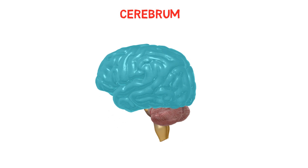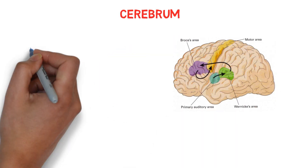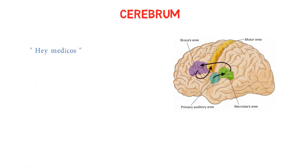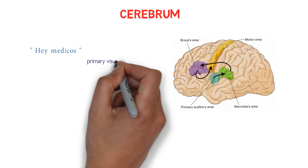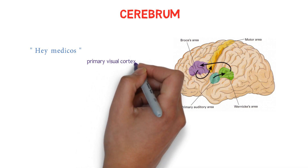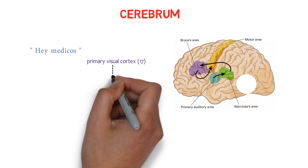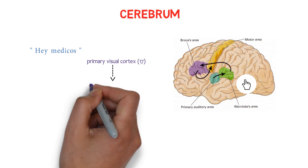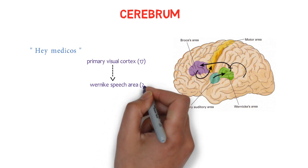We are learning about the cerebrum because it regulates many functions. For example, when you see the words 'hey medicos,' those signals are interpreted in your primary visual cortex — area number 17 — located in the most posterior portion of the brain, in the occipital lobe. The signals are then transferred to Wernicke's speech area, area number 22.